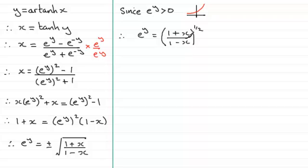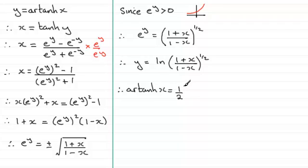Now, if I take natural logs to both sides, I therefore have that y would be equal to the natural log of 1 plus x over 1 minus x all to the power half. And then I could bring the half to the front here. And knowing that y is the inverse tanh of x, we get the final result that the inverse tanh of x can be expressed as half times the natural log of 1 plus x divided by 1 minus x.